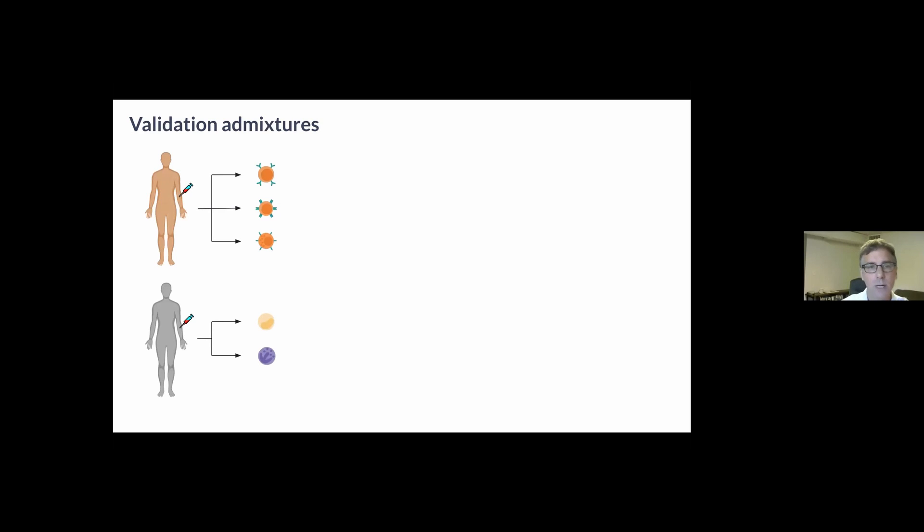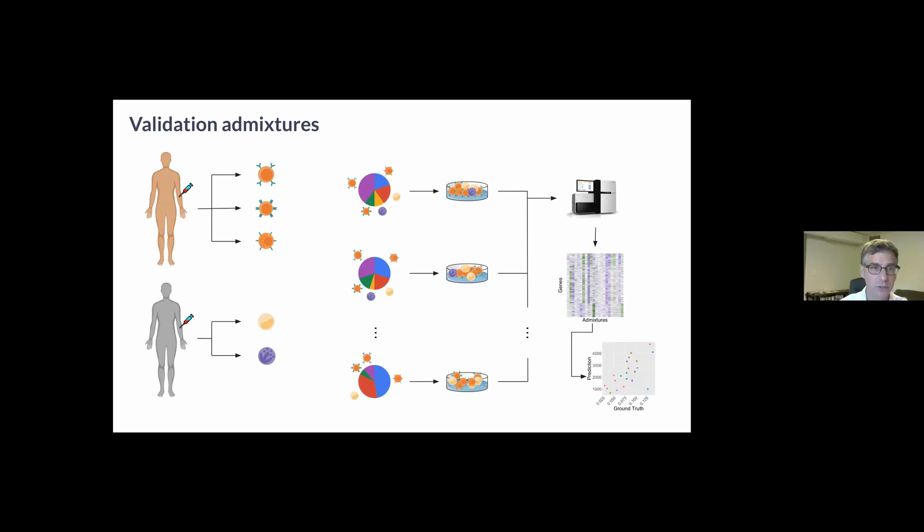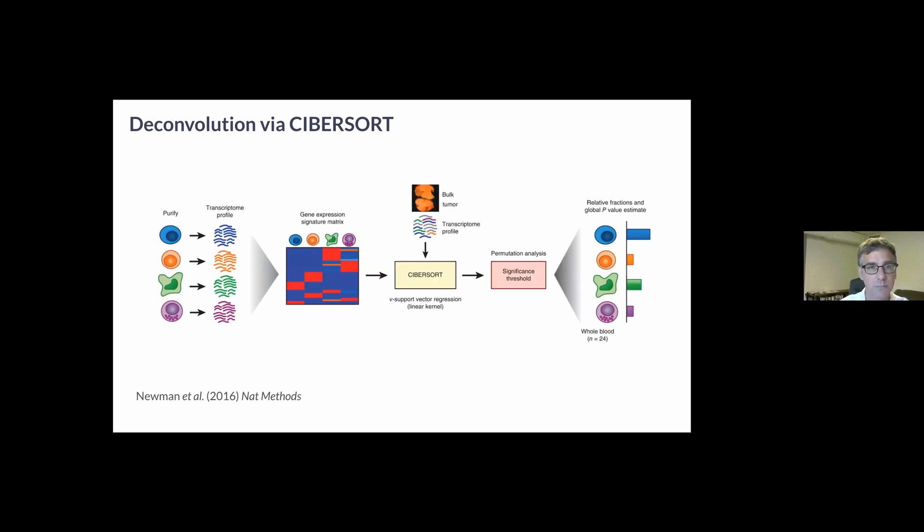We generated ground truth validation admixtures by purchasing immune cells from healthy donors. We extracted RNA from the cells and mixed the RNA in proportions to form an in vitro admixture. We repeated this about 96 times, sequenced them, pseudo-aligned and quantified them to get an expression matrix which we could feed into these deconvolution methods and then compare their predictions to the known mixing ratios.